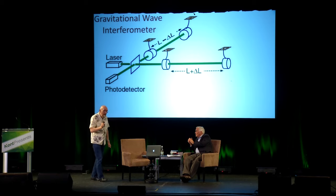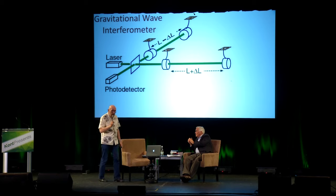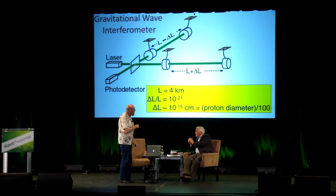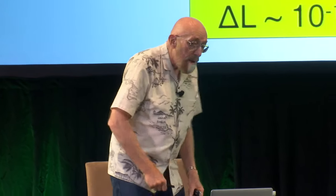That motion is really, really tiny. The distance between the mirrors is four kilometers. The motion is 10 to the minus 15 centimeters, or one one-hundredth the diameter of the proton. And the noise level in these instruments is almost 100 times below that. These are incredibly accurate instruments.